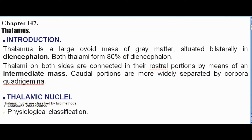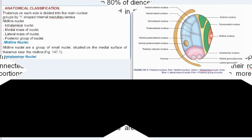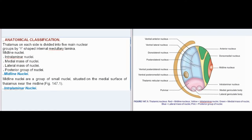Thalamic nuclei are classified by two methods: anatomical classification and physiological classification. For anatomical classification, the thalamus on each side is divided into five main nuclear groups by the Y-shaped internal medullary lamina.